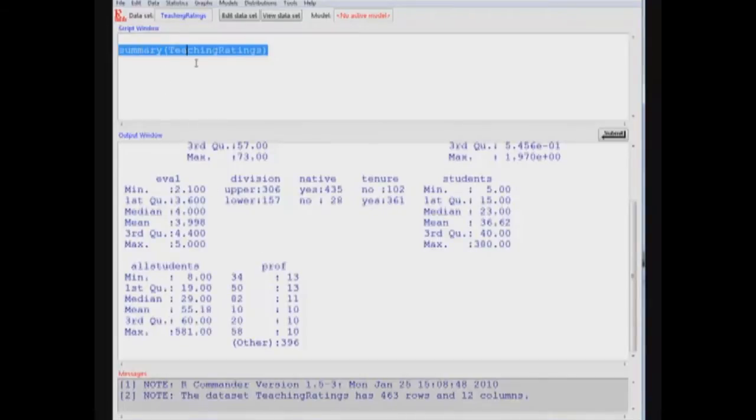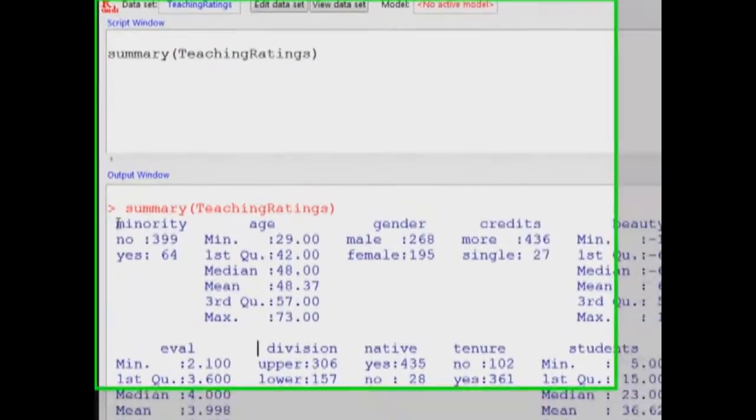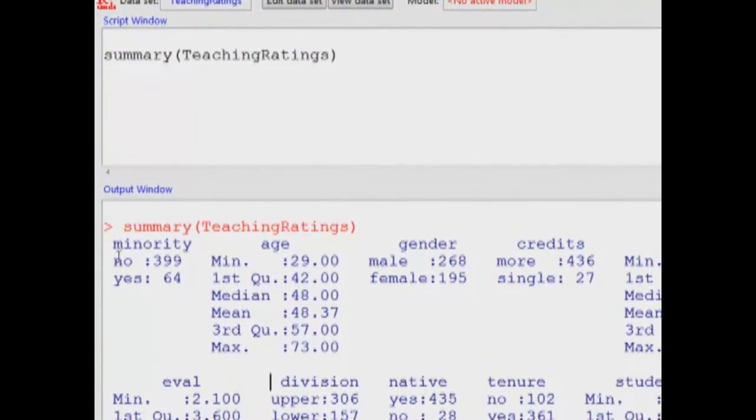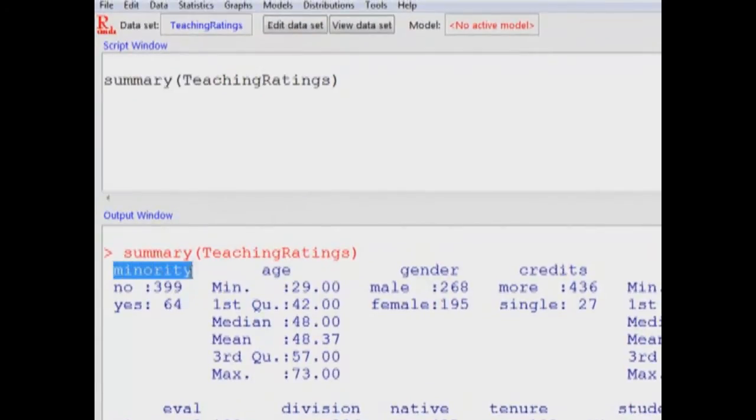This is the command that the software has executed, and the output window contains the results. For each variable, if it's a factor or a categorical variable, such as minority, you will get the tabulations only. That is, 64 professors or instructors were of minority origin, whereas 399 were not minority.